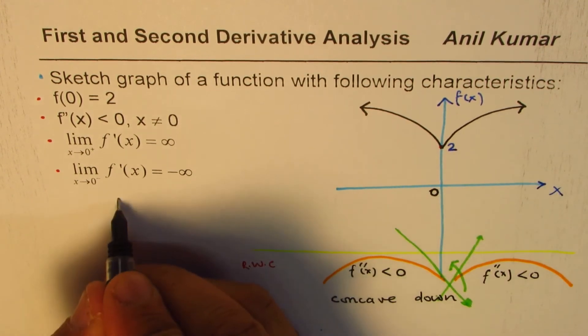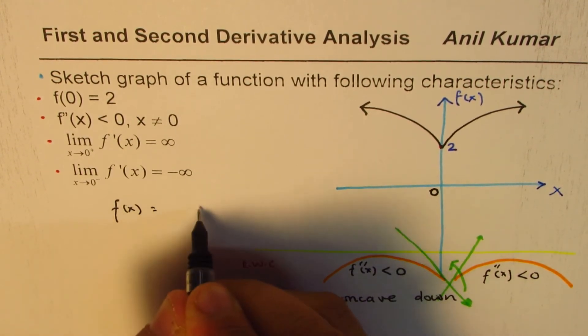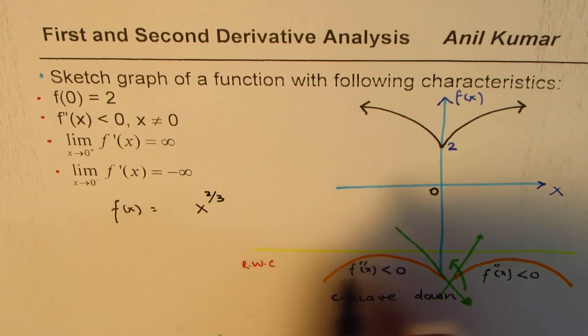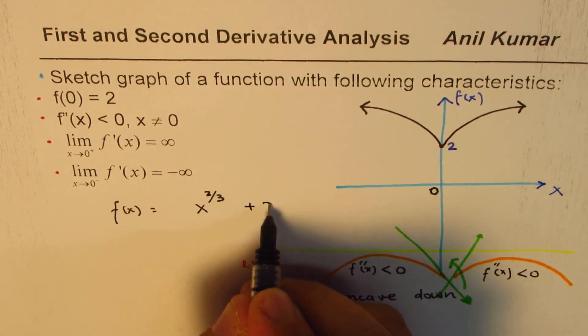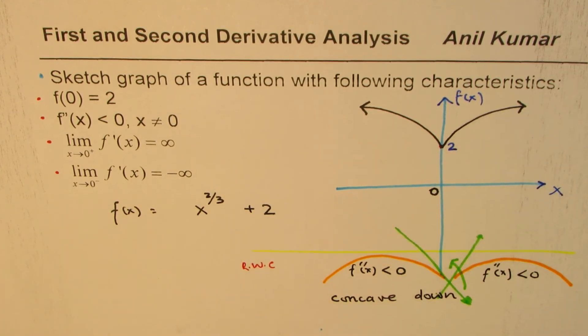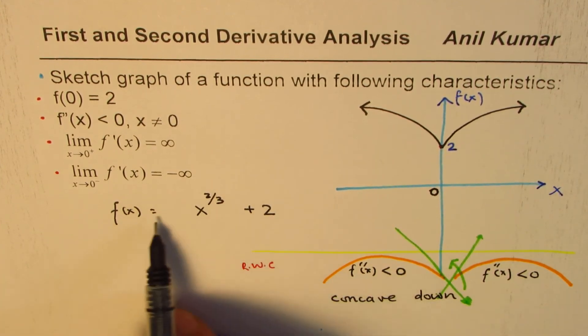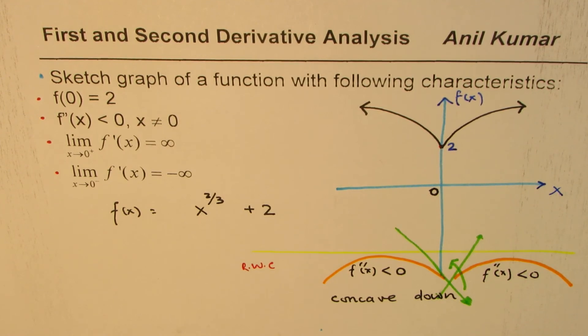If you know, the function could be x to the power of 2/3. Now, since at 0 we have a value of 2, plus 2 will give us a graph of the function which will kind of match what I have drawn.